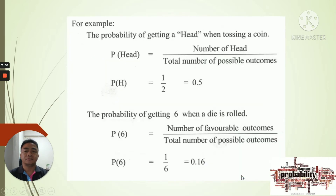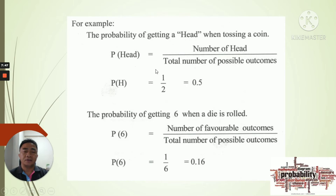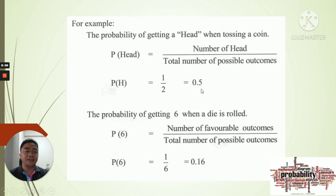So we have here an example — getting the head when tossing a coin. You write the probability of getting head: P(head) equals the number of heads divided by the total number of possible outcomes. We know that when tossing a coin, you have only two possible outcomes: head and tail. And there is only one head. So we have 1 over 2, which equals 0.5. The probability of getting heads when tossing a coin is 0.5.